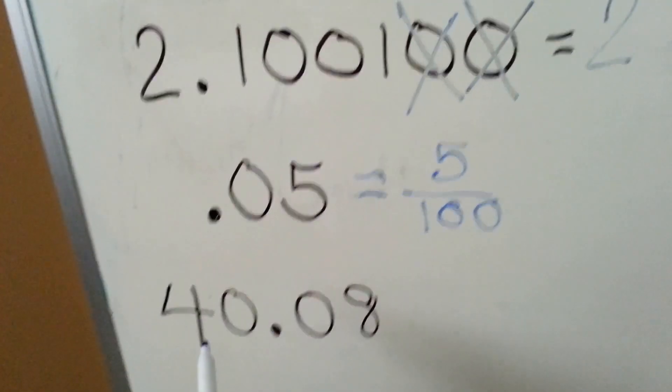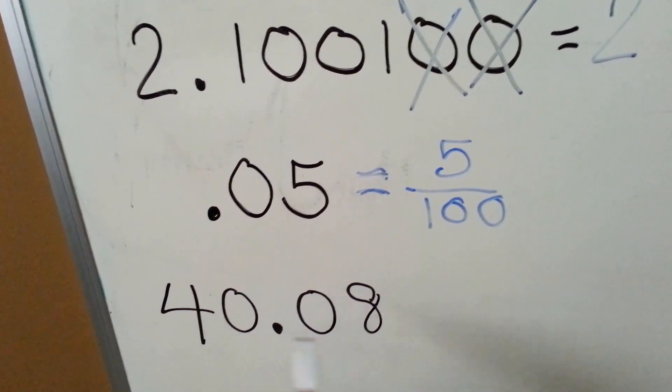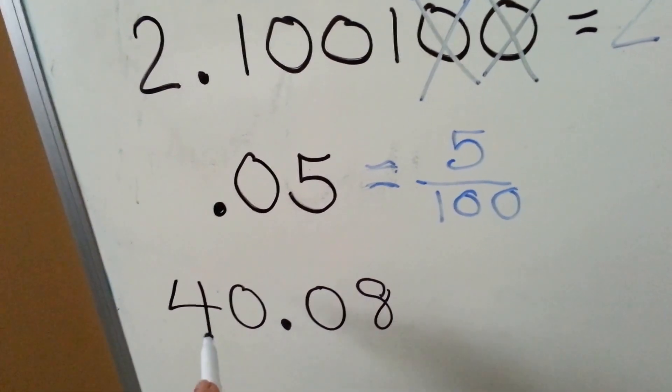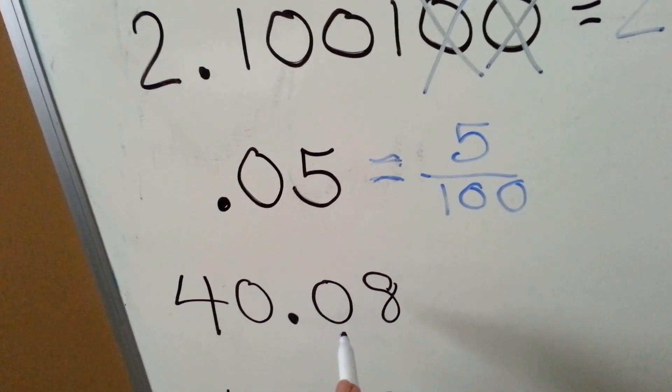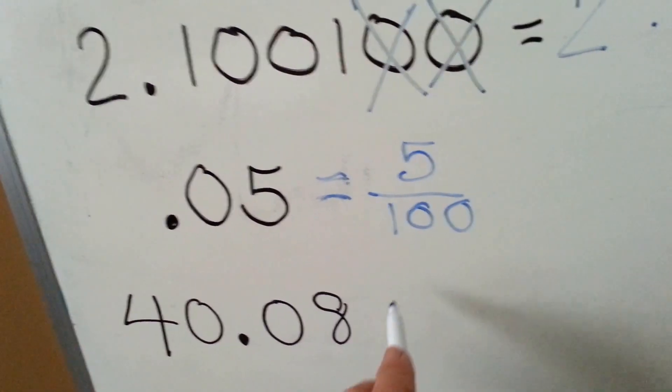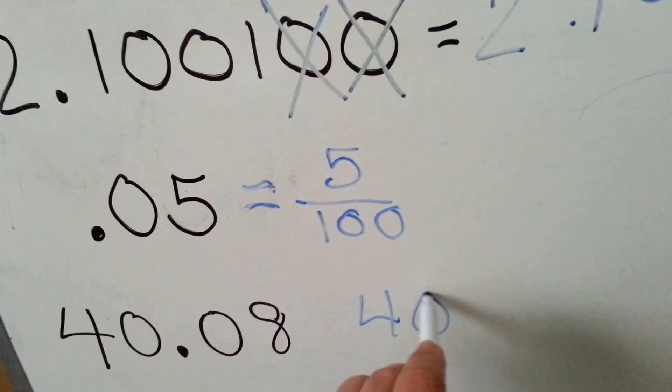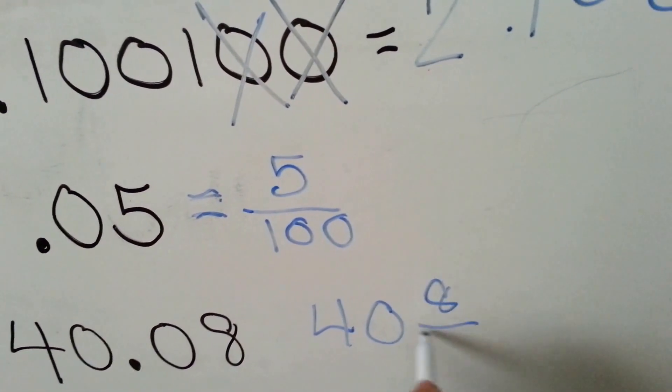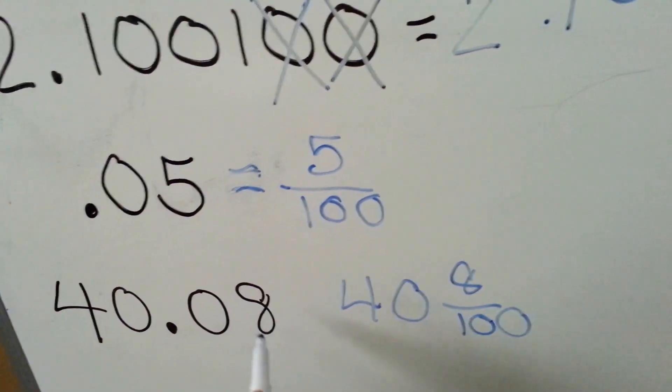This one also has no unnecessary zeros. These zeros are needed. We need this zero to say that this is forty. We need this zero so that the eight can be hundredths.